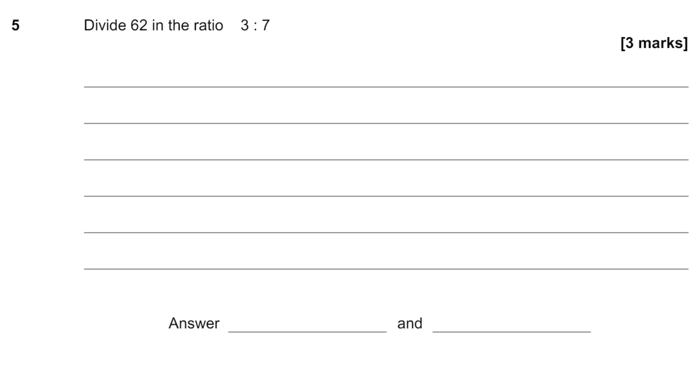Hey everyone, so this is question number 5 from the paper link down below, and we need to divide 62 in the ratio of 3 to 7, and it's a 3 mark question.